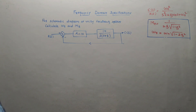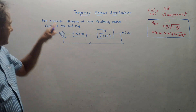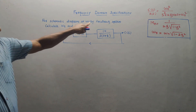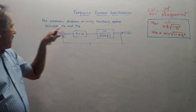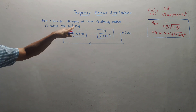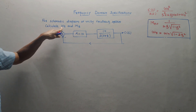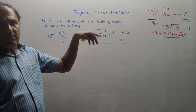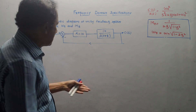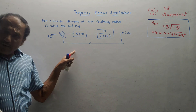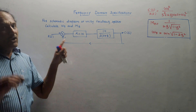Now the last variation in such type of numericals: for a schematic diagram of a unity feedback system, calculate ωr and Mr. The only difference is that a block diagram is given. Avoid common mistakes — there are two cascade blocks representing G(s).